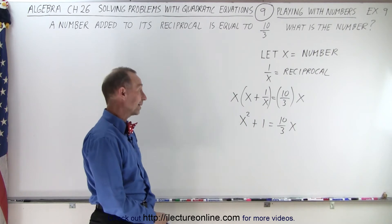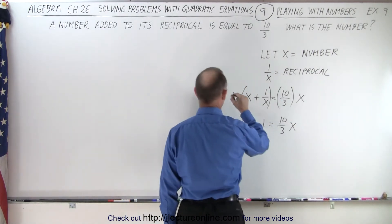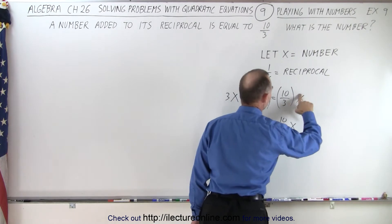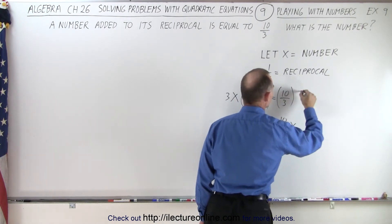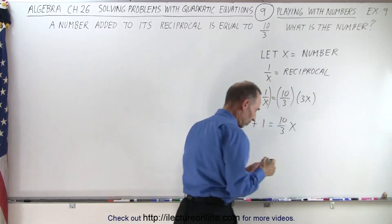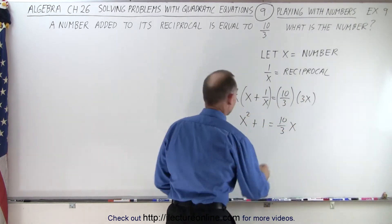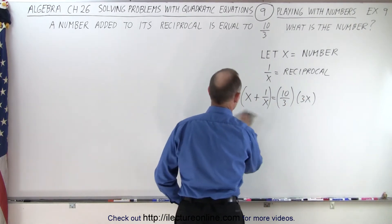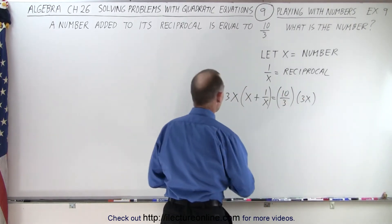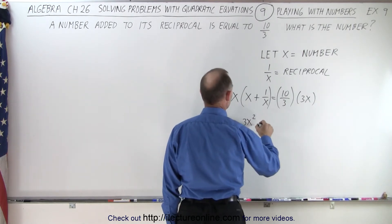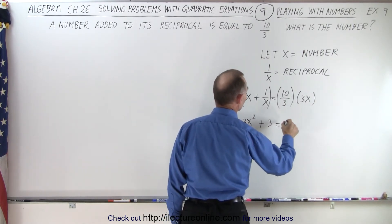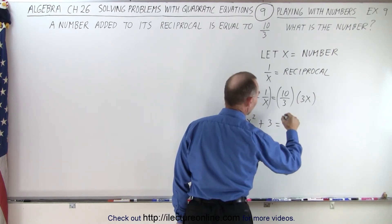So I'm going to do that, 3x and 3x. So let's try that again, because I don't want to end up with a fraction there. So we end up with 3x squared plus 3 is equal to, the 3 cancels out, that would be 10x.